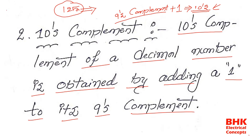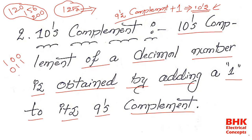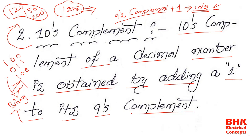Tens complement is only applicable for decimal numbers. If a number is 120, 156, or 200, we call these decimal numbers. But if a number is something like 1 0 0 0 1 1 1 0 0, we call that a binary number. Tens complement is only applicable for decimal numbers, not for binary numbers.